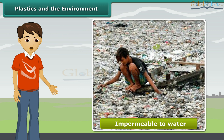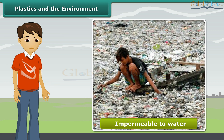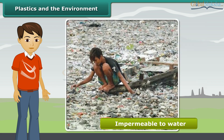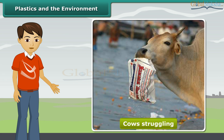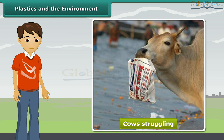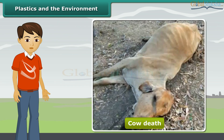Also, as plastics form a cover on the ground surface and are impermeable to water, the rain water would not be absorbed into the soil, thus diminishing our underground water reservoirs. You must have seen cows struggling to take out food from the plastic bags thrown near the garbage heaps. They end up eating the plastic bags as well, which can choke their respiratory tract or form a lining in their stomachs, causing their death.